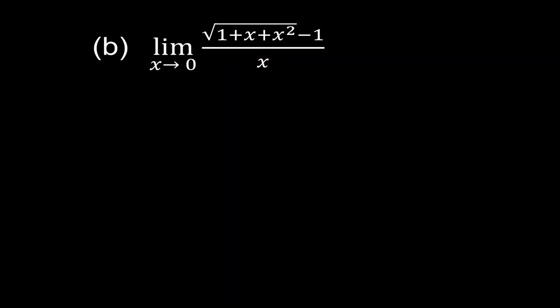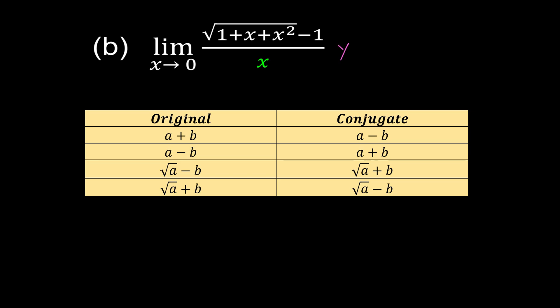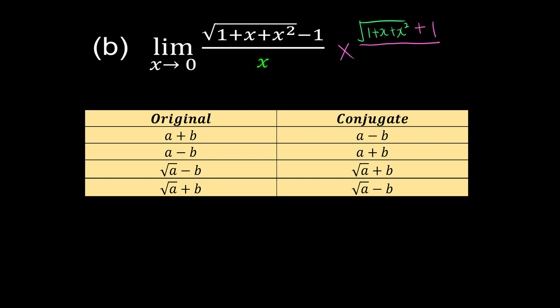Question 1b. First we check whether the denominator is 0 — for this case it's obvious that it becomes 0. So we're going to rationalize these equations first. We multiply by the conjugate: if we have minus, the conjugate becomes plus. So the conjugate of the expression gives us 1 plus x plus x squared, and don't forget it's a plus 1.